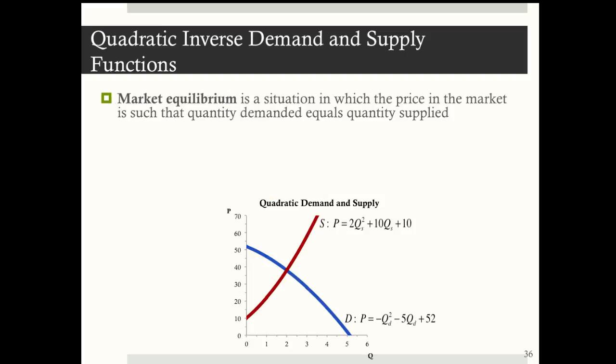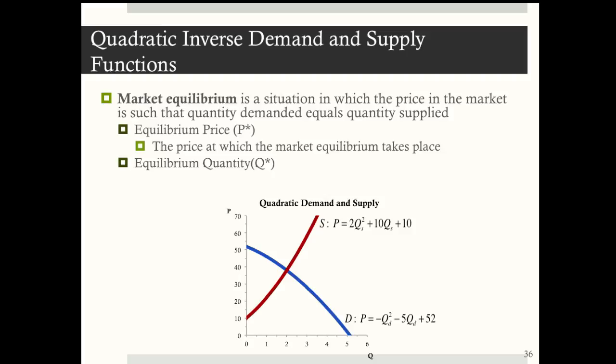Recall that a market equilibrium is a situation in which the price in the market is such that quantity demanded equals quantity supplied. An equilibrium has two parts: the equilibrium price P*, the price at which market equilibrium takes place, and the equilibrium quantity Q*, the quantity exchanged at the equilibrium price.